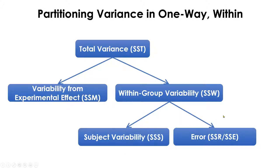Essentially, you will have a smaller error term as opposed to the one-way between-subject ANOVA.